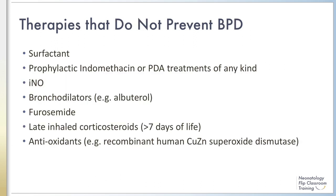A list of other medications and therapies have been studied, and current data do not support their role in the prevention of BPD. This list includes surfactant, prophylactic indomethacin or PDA treatment of any kind, inhaled nitric oxide, bronchodilators, diuretics, late inhaled corticosteroids, and some antioxidants. For example, surfactant was shown to decrease oxygen need at 28 days compared with intubation and no surfactant, but showed no benefit for BPD when compared to early CPAP use. In preterm infants less than three weeks of age developing chronic lung disease, furosemide administration has either inconsistent effects or no detectable effect.